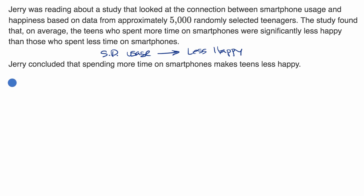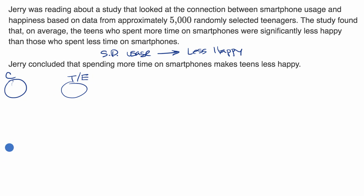In an experimental study, you would have a control group and a treatment group, sometimes called the experimental group, and you would randomly assign participants to one of those two groups. Then you would make the treatment group use the cell phone more and see if they are less happy. That's not what happened here.